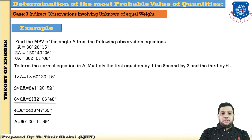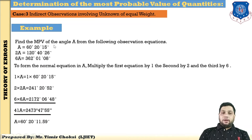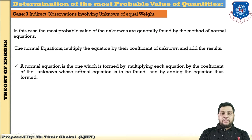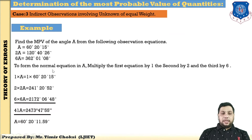To find the most probable value, form the normal equation. The normal equation is formed by multiplying both sides of each equation by the coefficient of the unknown. Here, the coefficients are 1, 2, and 6 for the first, second, and third equations respectively. So multiply both sides of each equation by those coefficients.